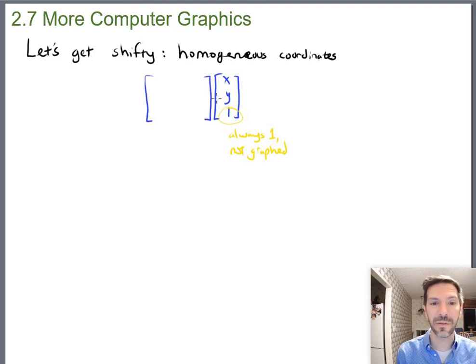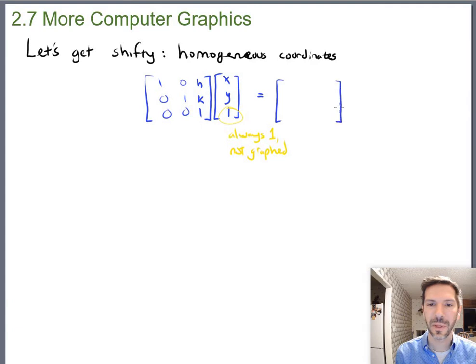So now instead of having a two by two over here, we're going to have a three by three. I'm starting with an identity matrix. And let me just put an h here and a k there. Now let's see what happens when we multiply that out. Notice, so column here times the first row, that'll be x, zero y, plus h. So x plus h.